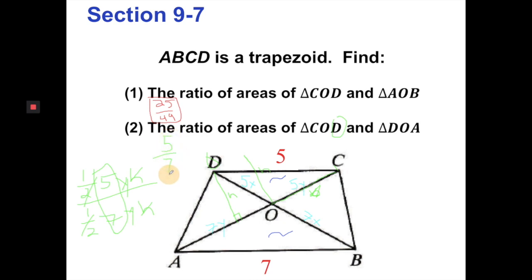So COD to DOA is a 5-to-7 ratio. This is the example from the beginning — two triangles where only one key dimension differs but the other (the height) is the same. Changing only the base changes the area by that same factor, not the square of it. That's the difference between similar figures (both base and height change by k, area changes by k²) versus this case where only the base changes and the area changes by that same factor.